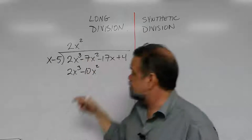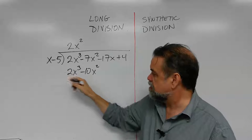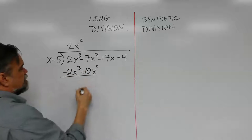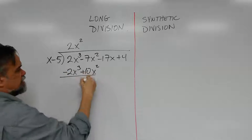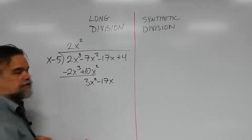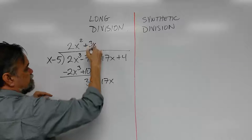And then we say 2x squared times x minus 5 is 2x cubed minus 10x squared. Then, because we're going to be subtracting here, we change our signs. We make this minus and this plus, and then add them all up. This cancels out, and we get 3x squared. Drop down the minus 17x, and then you know how to do this. x times what is 3x squared? 3x.